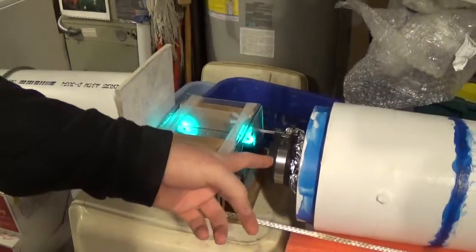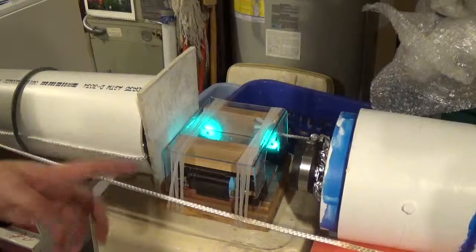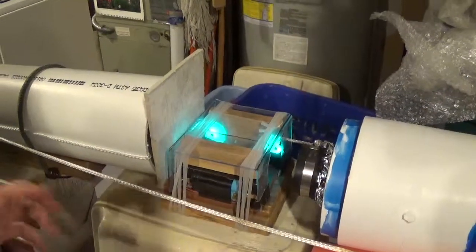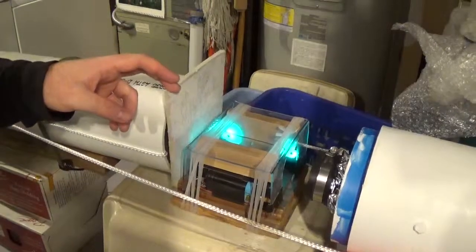After the ball breaks through the membrane, it will pass through these two light beams 100 millimeters apart, measuring the speed, then hit this piece of hardy plank.